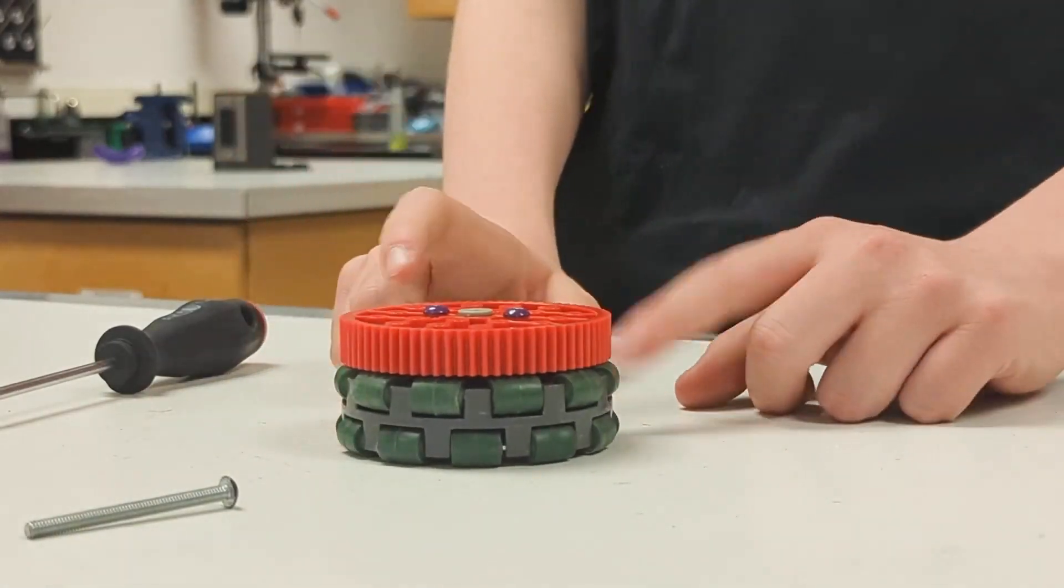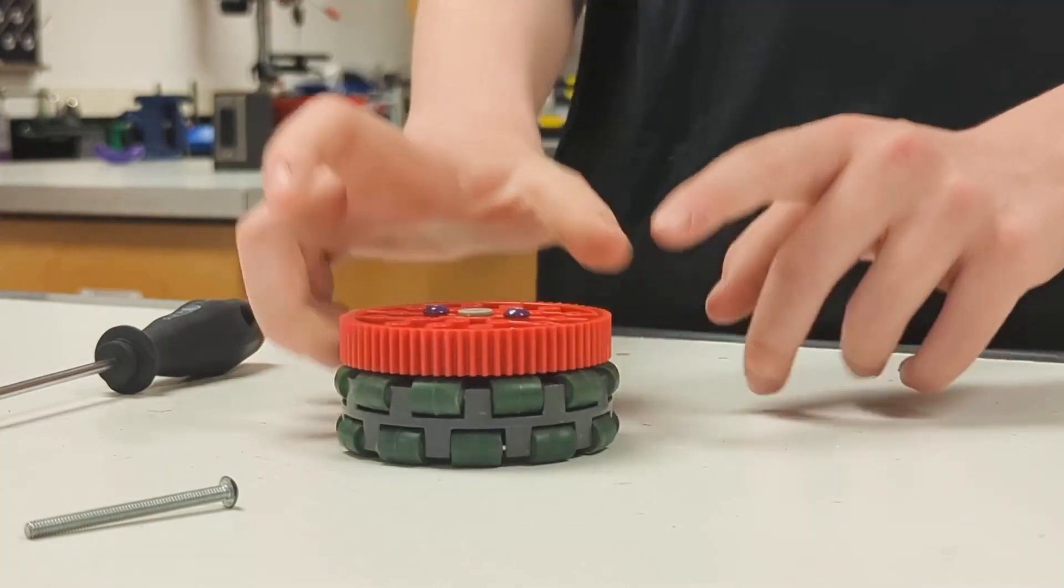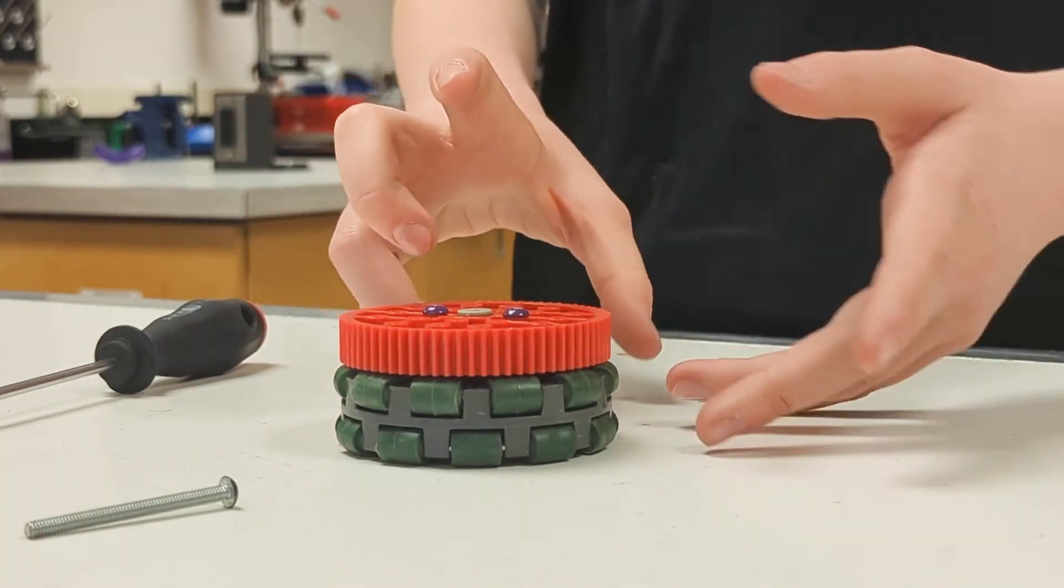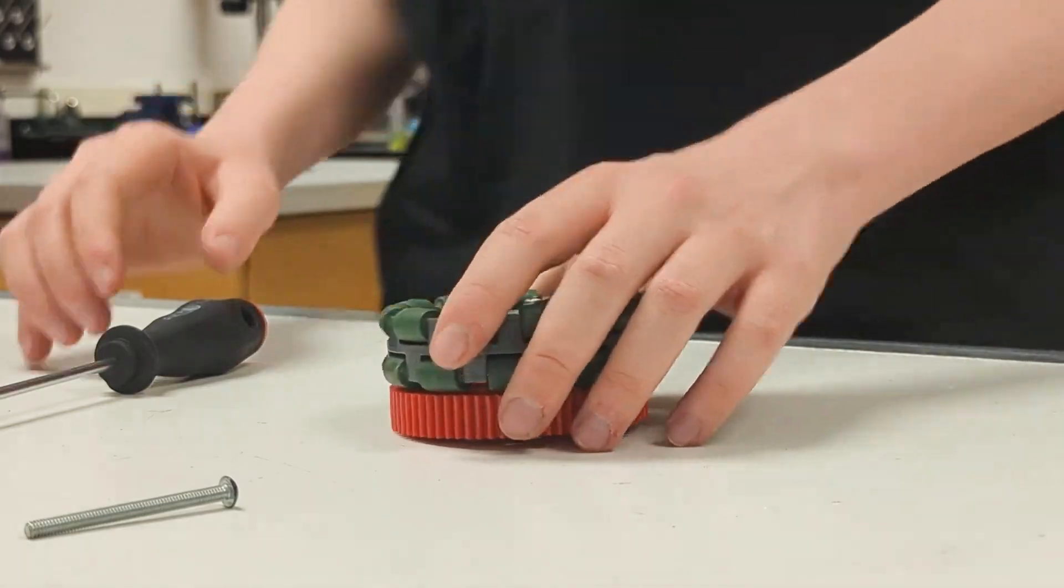Now you would repeat this five other times. Three of these times would be with the omni wheel, two of the times would be with the grip wheel. Now back to the assembly.